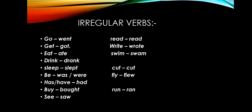Now we have irregular verbs — verbs that don't follow a rule. Like: go → went, get → got, eat → ate, drink → drank, sleep → slept. Have: singular 'had', plural 'had'. Read → read, write → wrote, swim → swam, cut → cut, fly → flew, run → ran.